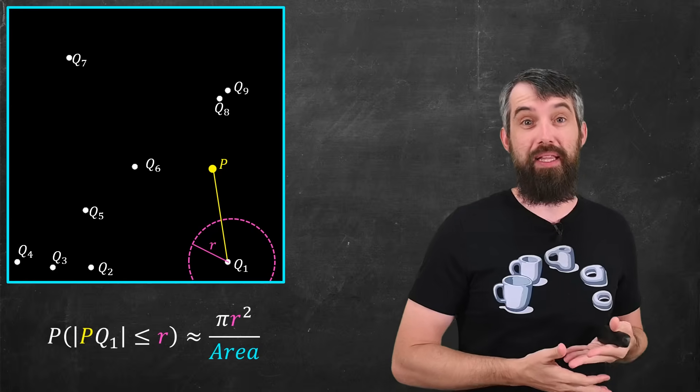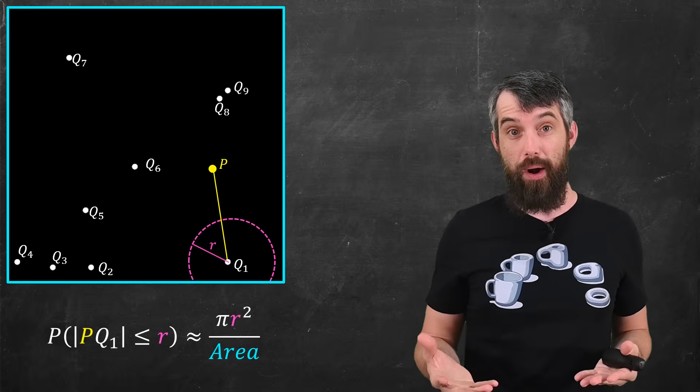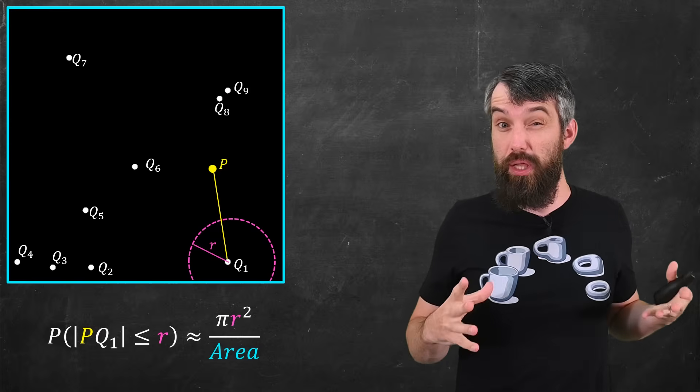That is, I want to compute the probability that the distance between P and Q1 is less than R. Now, remember I said my illustration was poor? I'm assuming that the region is really large.